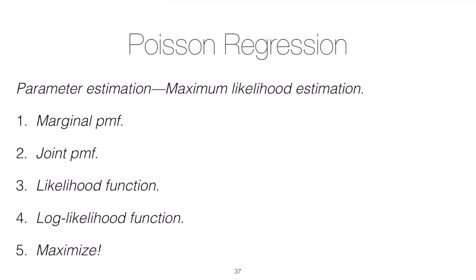To estimate the parameters of the Poisson regression model, we'll rely on maximum likelihood estimation. This is the same as it was for the binomial regression model, the same estimation procedure.